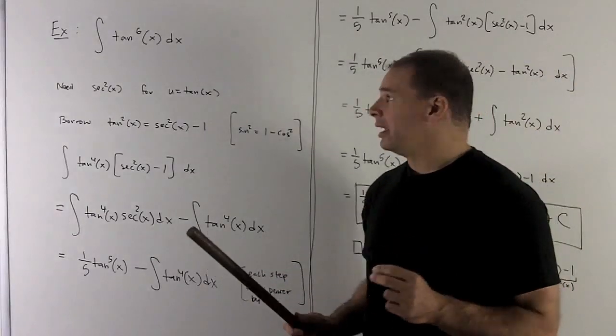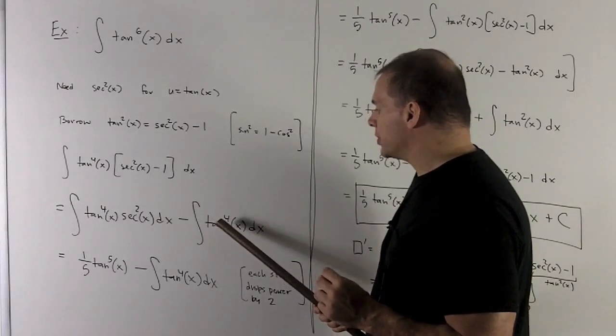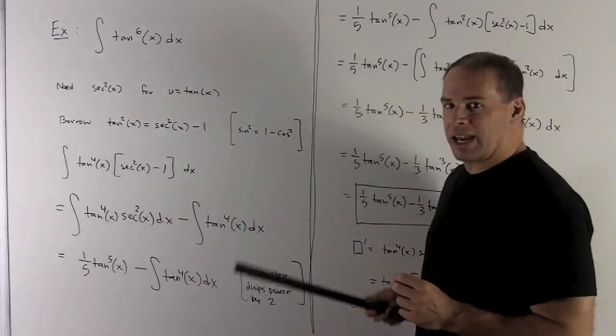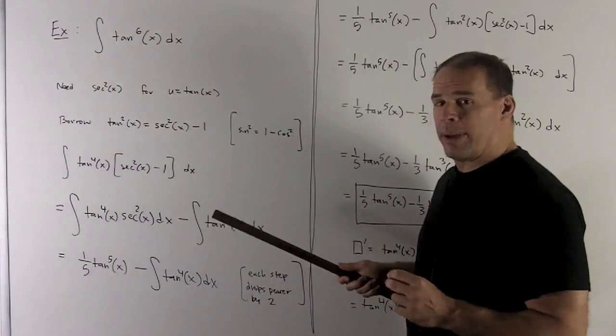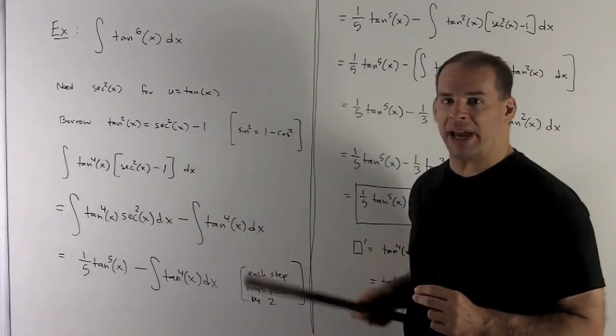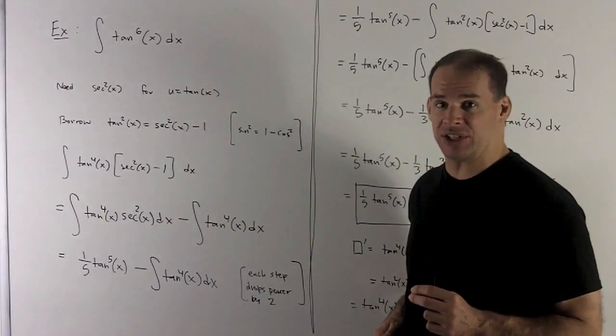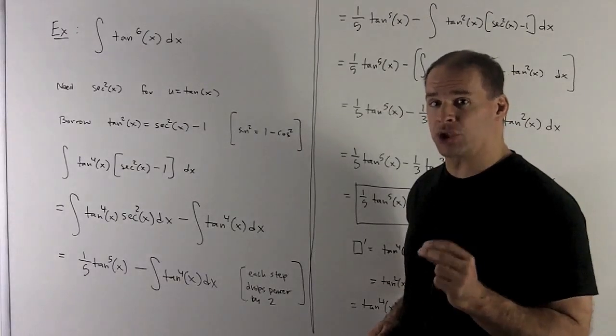The idea is I'm going to borrow another tan squared out of this, and you'll notice every step that I go, I'm going to have a power of tangent that's getting dropped by 2 until we eventually get down to 0. So that's how this trick's going to work.